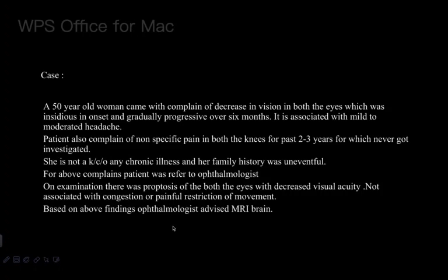Case: A 50-year-old woman presented with a complaint of decrease in vision in both eyes, insidious in onset and gradually progressive over 6 months, associated with mild to moderate headache. The patient also complained of non-specific pain in both knees for the past 2-3 years, for which she never got investigated. She is not a known case of chronic illness and her family history was uneventful. On referral to an ophthalmologist, there was proptosis of both eyes with decreased visual acuity, not associated with congestion or painful restriction of movement.